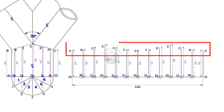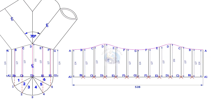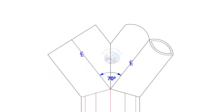Draw a smooth curve starting from A to A. You may need to add or reduce additional length to achieve the required length of the header. To lay out the true length of the branches, the process is the same.